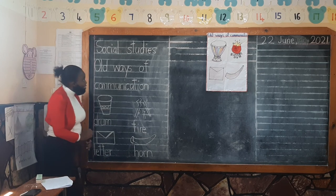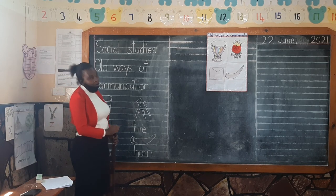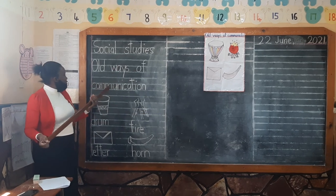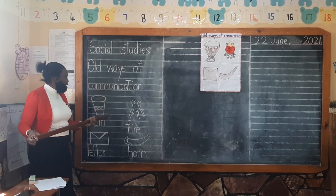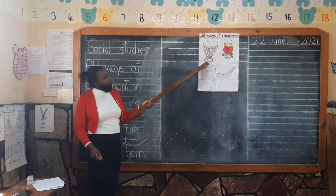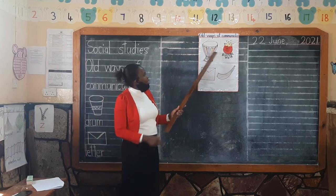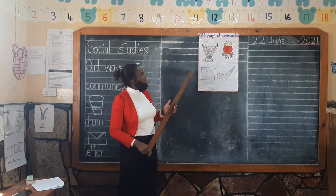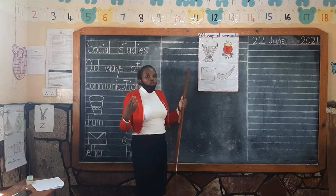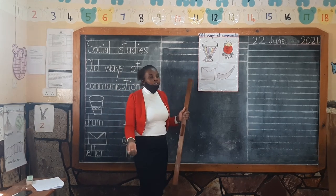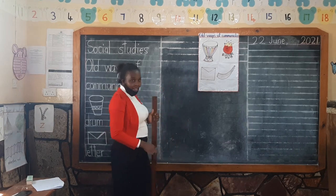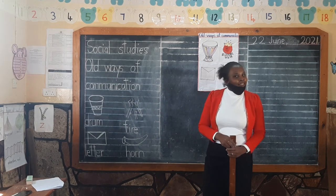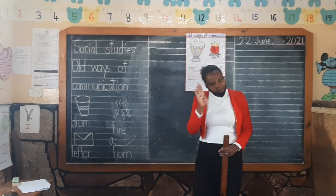This was all that I had for you today. We looked at four ways of communication — a drum, fire, a letter, and a horn. These are the things that people long ago used to communicate to one another. This has been Teacher Sheffy. Thank you, and bye-bye.